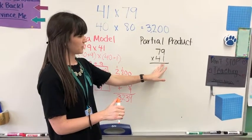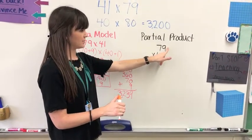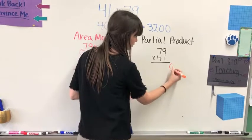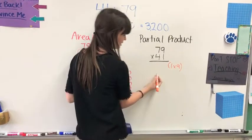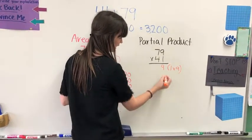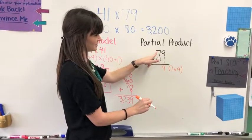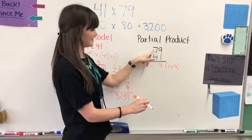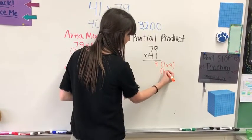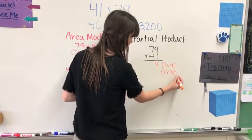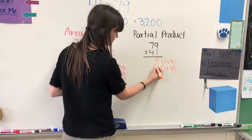First thing we're going to do is we're going to multiply this 1 times 9. So I'm going to write 1 times 9. 1 times 9 is 9. The next thing we're going to do is we're going to multiply this 1 times this 7. But the 7 is in the tens place, so it is 1 times 70. 1 times 70 is 70.